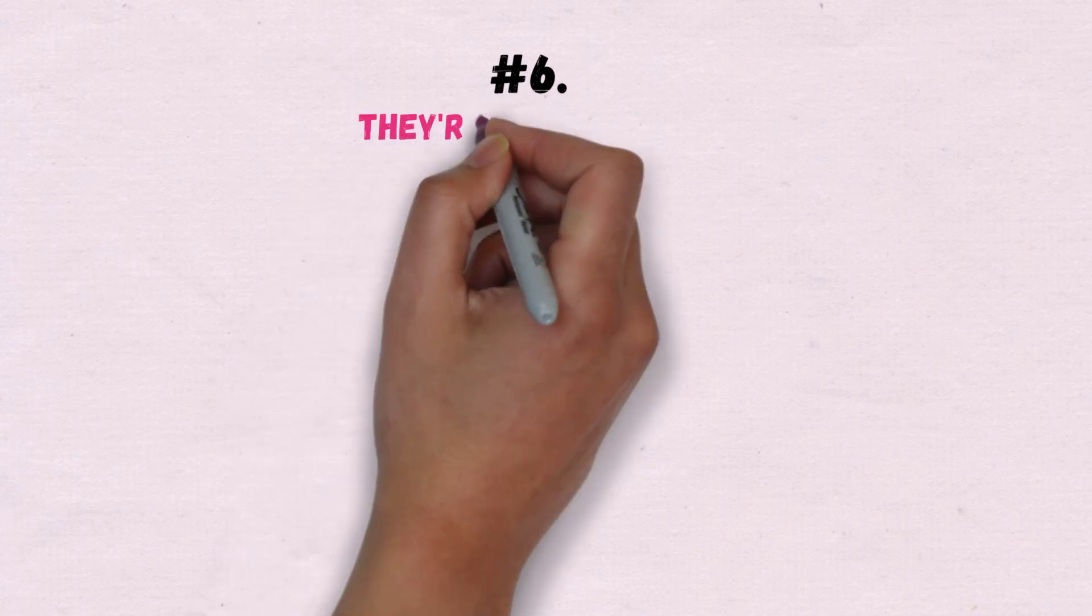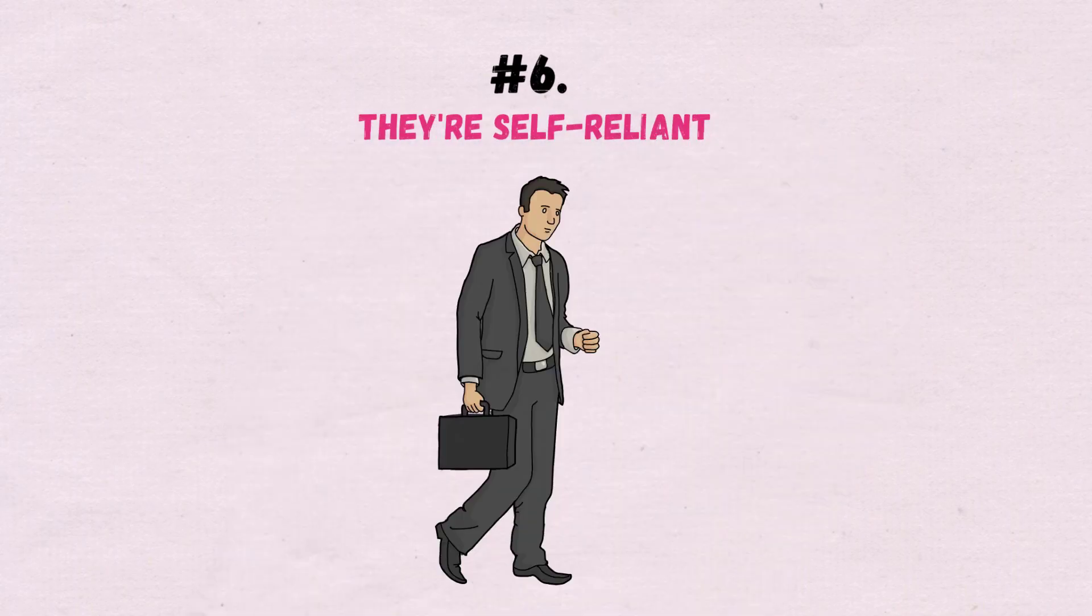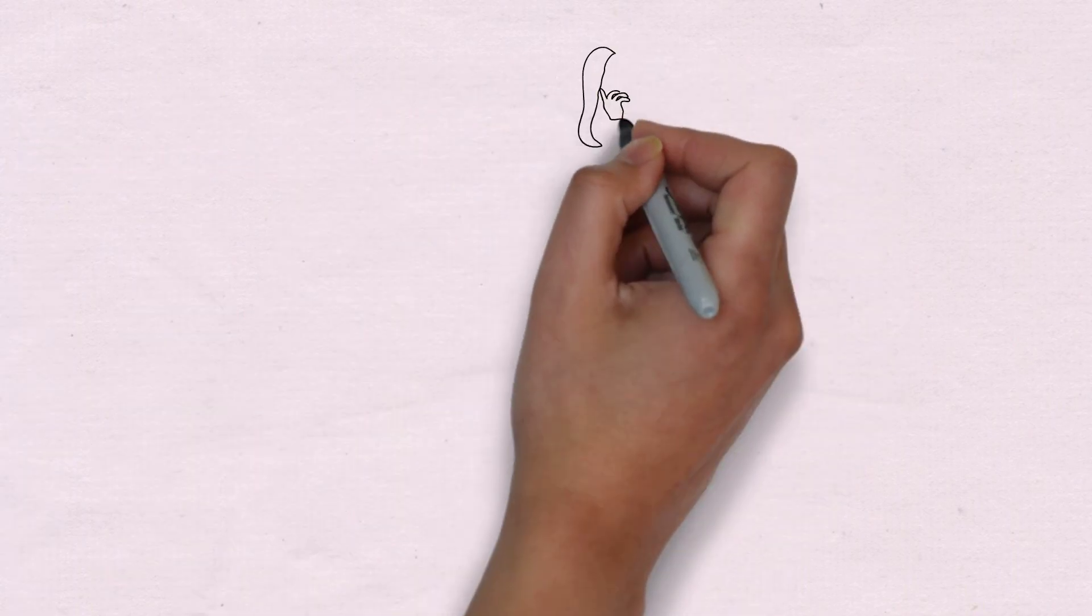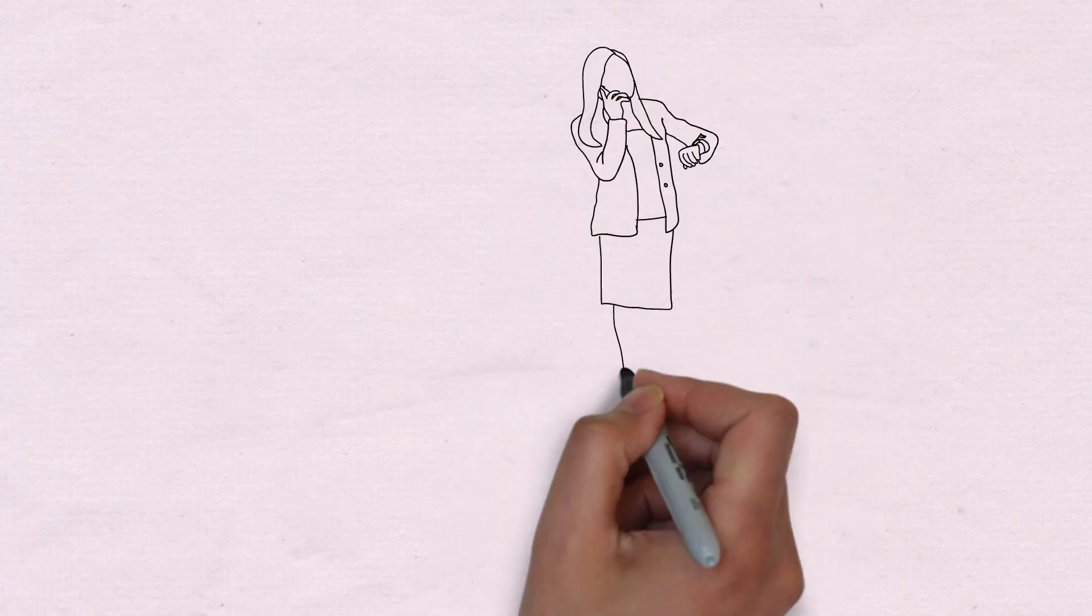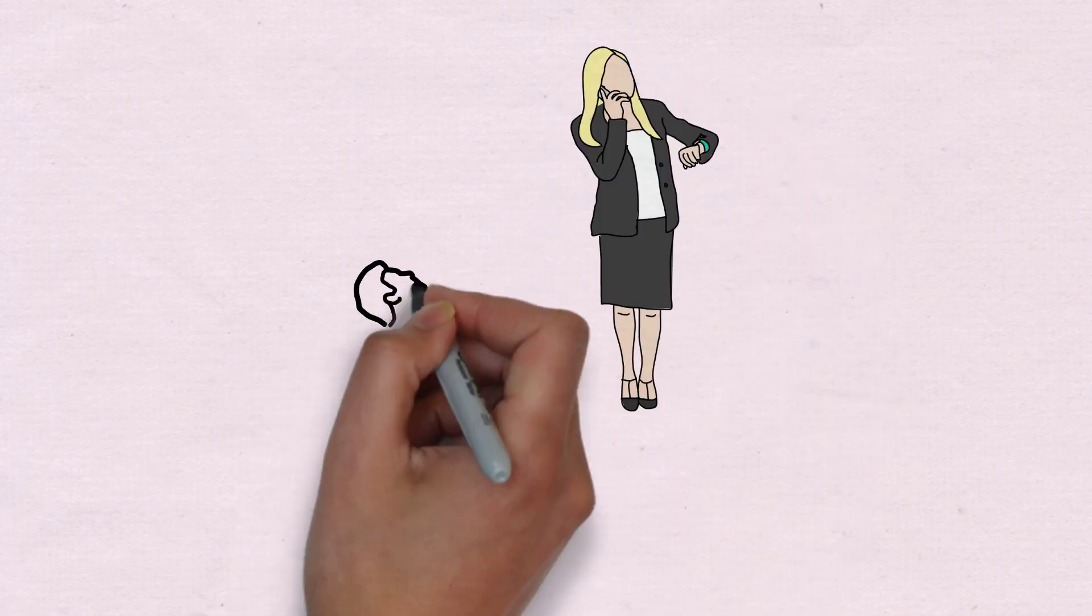6. They're Self-Reliant. They're unafraid of doing things on their own. They're pros at doing it alone, whether it's lunch, catching a train, or making life decisions.